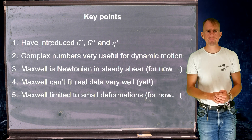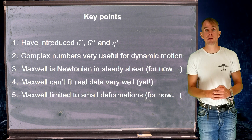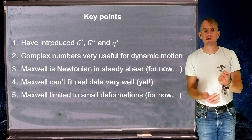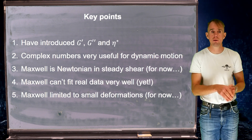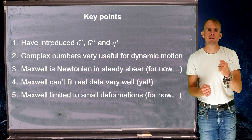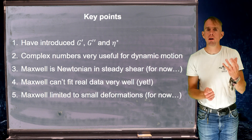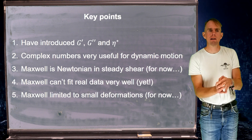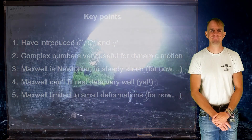To recap key points: we've looked at the response of a single Maxwell element to oscillatory deformation and introduced three new material parameters — elastic modulus G prime, viscous modulus G double prime, and complex viscosity eta star. Complex numbers are a very useful compact notation for oscillatory analysis involving phase differences. Looking ahead at what's wrong with Maxwell: it predicts Newtonian viscosity in shear flow, a single relaxation time can't fit real data well, and we're limited to small deformations due to our frame of reference. All of these issues will be addressed in future lectures.